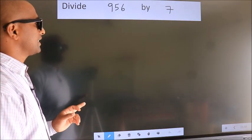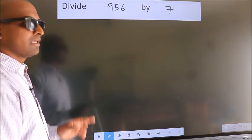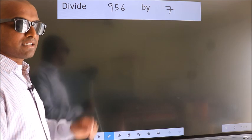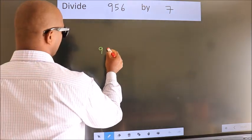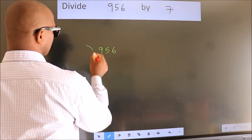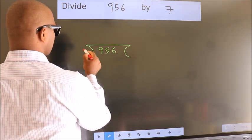Divide 956 by 7. To do this division, we should frame it in this way. 956 here, 7 here.